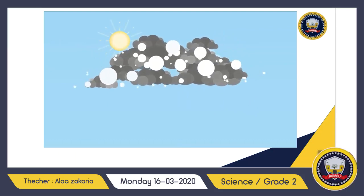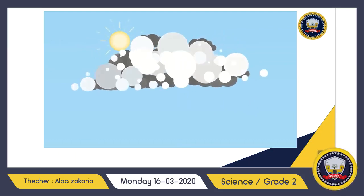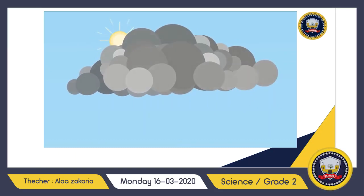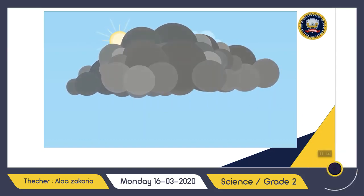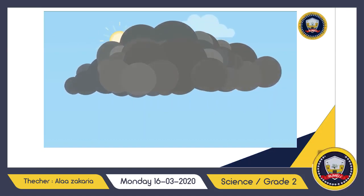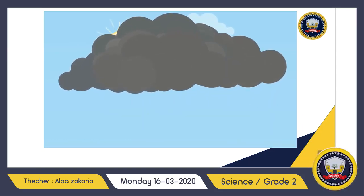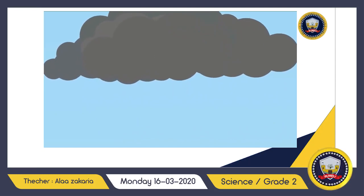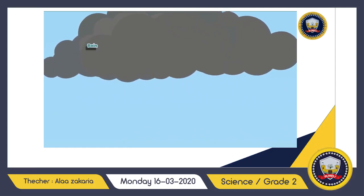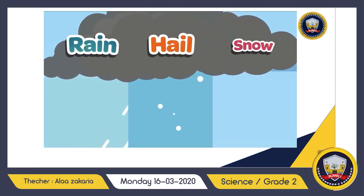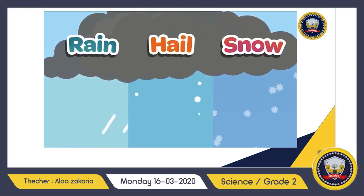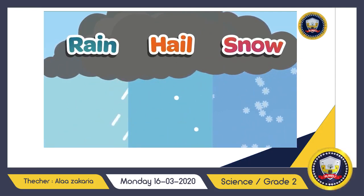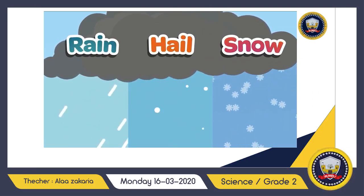As these droplets of water join together to become bigger drops, they become too heavy to stay in the air and fall back down to earth as rain, hail, or snow. This is known as precipitation.